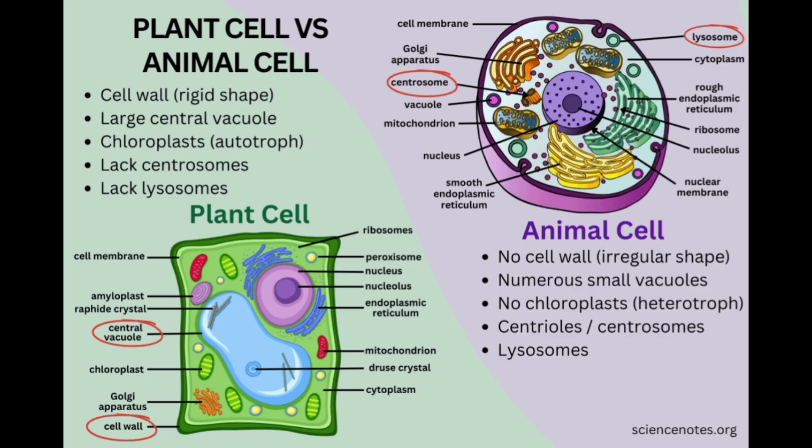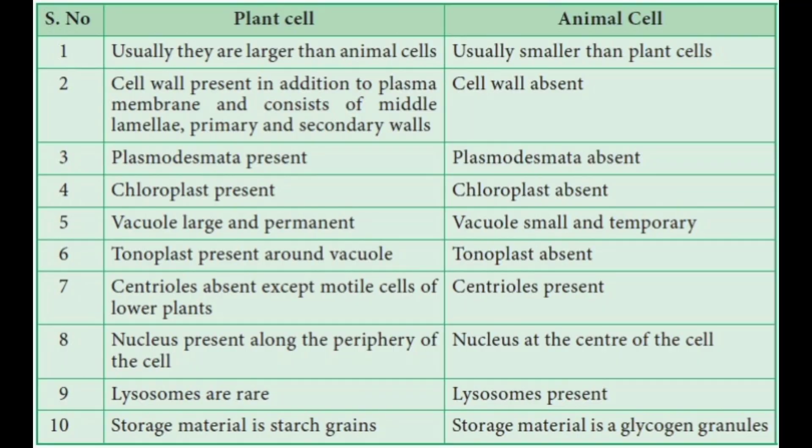The next part of the chapter is a comparison between plant cells and animal cells. Plant cells are usually larger than animal cells, while animal cells are usually smaller. Cell wall, plasmodesmata, and chloroplasts are present in plant cells, whereas cell wall, plasmodesmata, and chloroplasts are absent in animal cells.